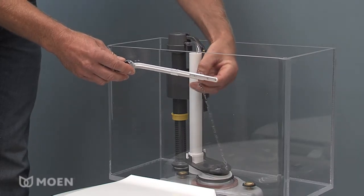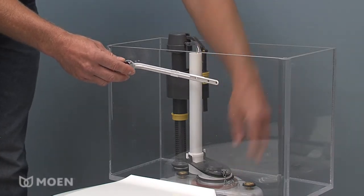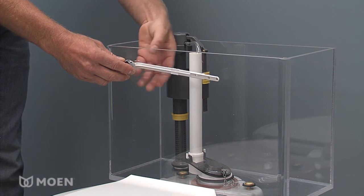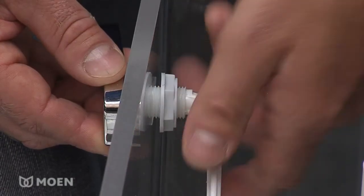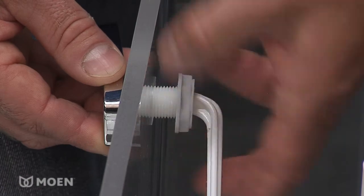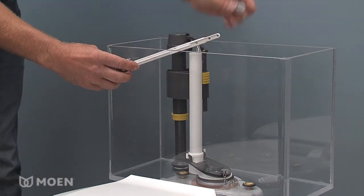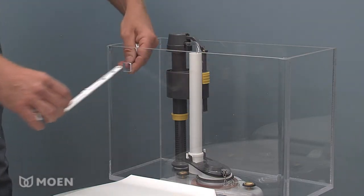After removing the tank lid, remove the existing tank lever by unhooking the flapper chain from the lever arm and removing the nut inside the tank that is attached to the lever. It is important to note that you should be turning the nut in a reverse threaded direction. You may require pliers for this.